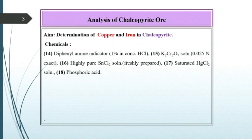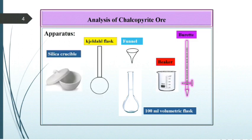K2Cr2O7 solution 0.025 normal exact, highly pure SnCl2 solution freshly prepared, saturated HgCl2 solution, and phosphoric acid. Apparatus: silica crucible, Kjeldahl flask, beaker, burette, and 100 ml volumetric flask.